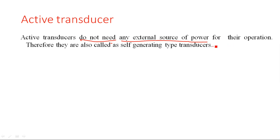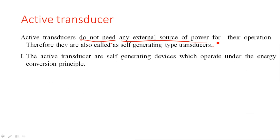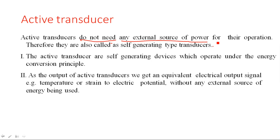Active transducers do not need any external source of power for their operation; therefore they are also called self-generating type transducers. Active transducers are self-generating devices which operate under the energy conversion principle — one form of energy into another. As the output of an active transducer, we get an equivalent electrical output signal, for example, temperature or strain converted to electric potential, without any external source of energy.